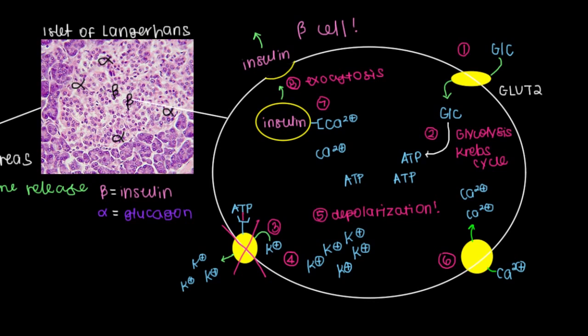Which, in this case, is the portal venous blood, which will send it to the liver. So that's how insulin's released from beta cells.